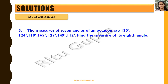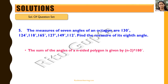The next question gives us the measures of seven angles of an octagon, which is an eight-sided closed polygon. We need to find the eighth angle. The key formula to know is that the sum of the interior angles of any n-sided closed polygon is (n − 2) × 180 degrees.